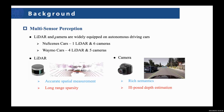LiDAR and Camera are two sensors widely equipped on autonomous driving cars. For example, the NuScenes cars have one LiDAR and six cameras, while the Waymo cars have four LiDAR and five cameras. Point cloud collected by LiDAR has accurate spatial measurements but gets sparse with increasing distance. Images collected by the camera capture rich semantics, but estimating depth from images is a long-standing ill-posed problem. Therefore, making the best of the two worlds can benefit reliable environment perception.